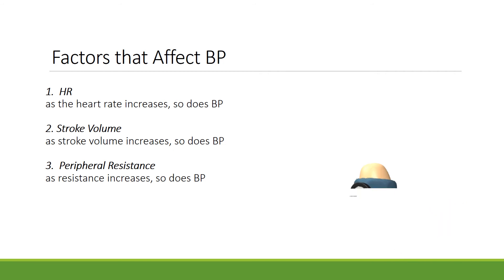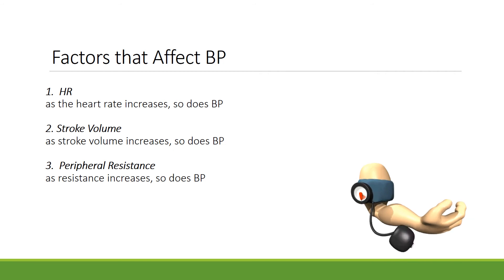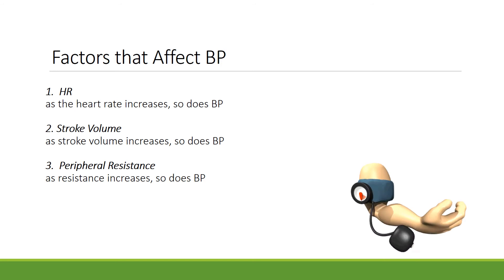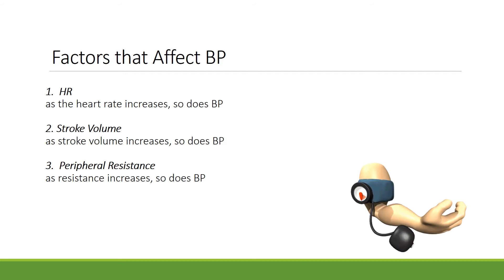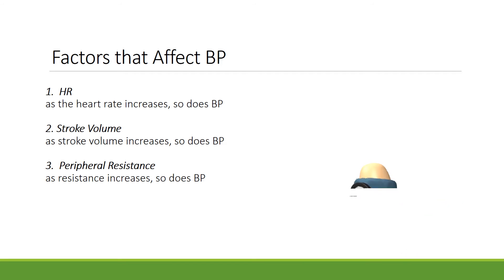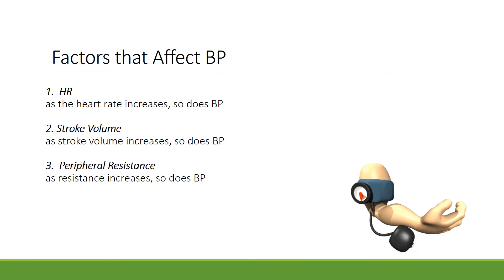To recap, there are three factors that affect blood pressure: heart rate, stroke volume, and peripheral resistance. As heart rate increases, so does blood pressure. As volume increases, so does blood pressure. And as resistance increases, so does blood pressure.